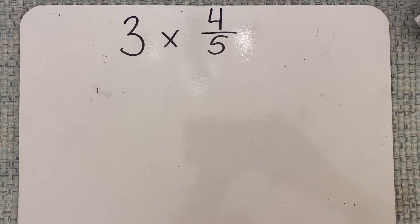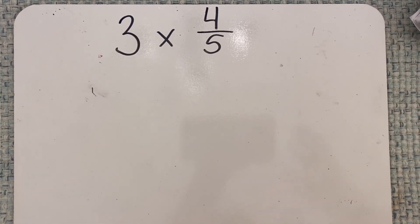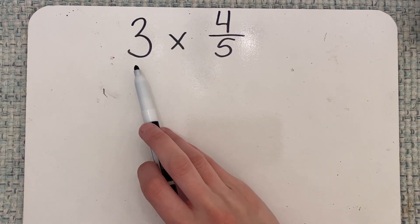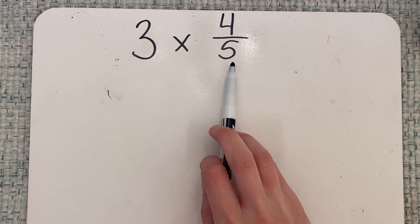When we multiply a whole number by a fraction, what we're really saying is that we're making multiple groups of the fraction. So in this case, three groups of four-fifths.